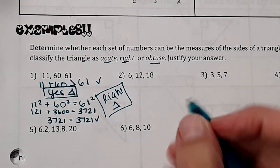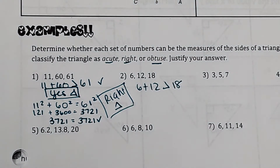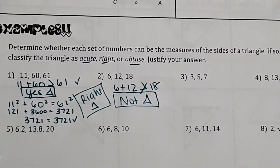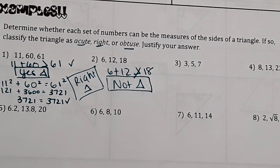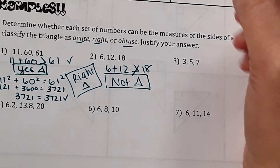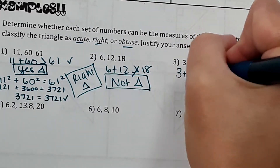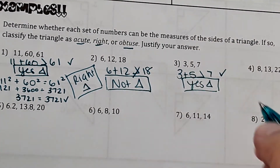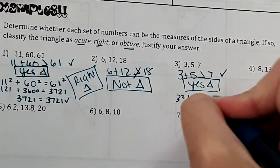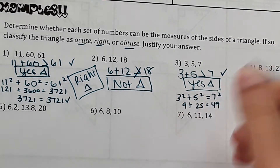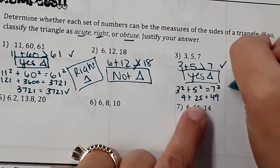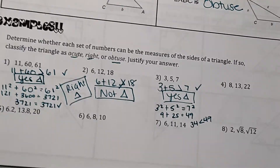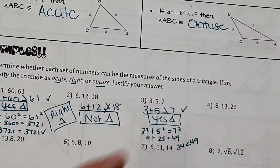Number two: 6 plus 12 equals 18, which is not greater than 18, so this is not even a triangle. Number three: 3 plus 5 is greater than 7, so yes it's a triangle. Using Pythagorean Theorem: 3 squared plus 5 squared versus 7 squared — that comes out to 34 less than 49. Since a squared plus b squared is less than c squared, or c squared is greater, then it's an obtuse triangle.